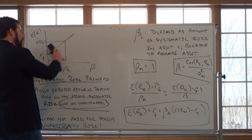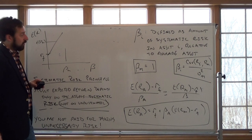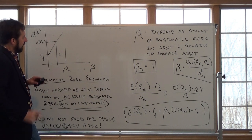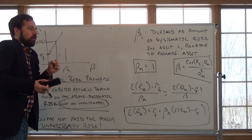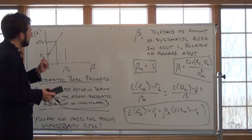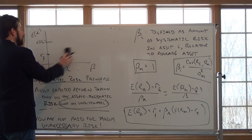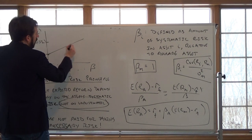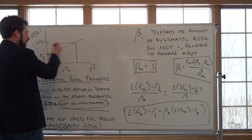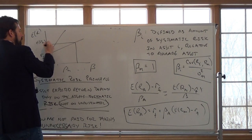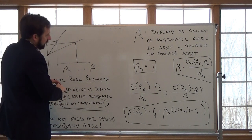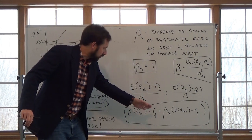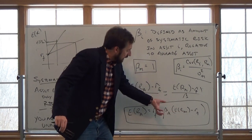Everything should plot on the security market line. If the line were steeper, you would get more return for bearing a unit of risk. The steepness of the SML tells you how much the market rewards you for bearing a unit of market risk — it also reflects how fearful the market is. When markets are stable the SML may be flatter; as uncertainty grows and the market starts crashing, the SML gets steeper, requiring more return per unit of systematic risk.